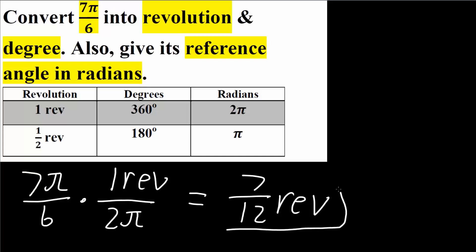Next we want to convert it to degrees, and we do something similar. So we say 7π over 6 times, and we know that π radians is equivalent to 180 degrees, so we say 180 degrees over π.